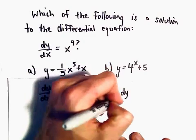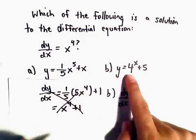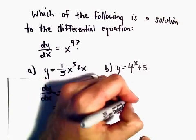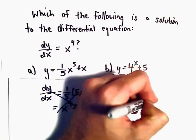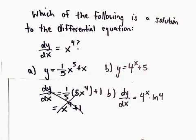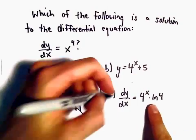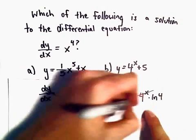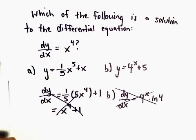Part b: if we take the derivative of 4 to the x plus 5, the derivative of 4 to the x is going to be 4 to the x times the natural logarithm of 4. The plus 5 just turns into a constant. Again, that's definitely not just x to the fourth.